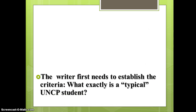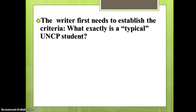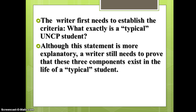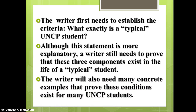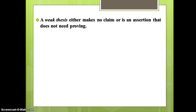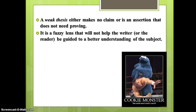We have to prove that these categories exist. The writer first needs to establish criteria — what exactly is a typical student? A writer still needs to prove that these three components exist in that typical student's life, and will need many concrete examples. It's crucial that we recognize the analytical process is an investigative one, but also an argumentative one. When we analyze, we're breaking down, and what we're doing when we analytically argue is showing how that breakdown works. A weak thesis either makes no claim or is an assertion that doesn't need proving.